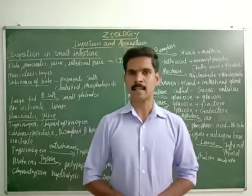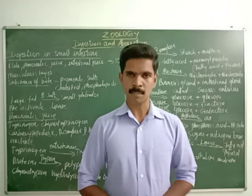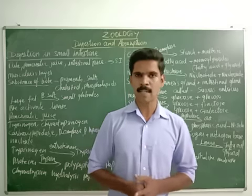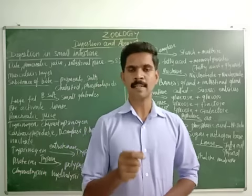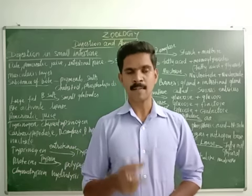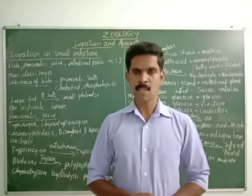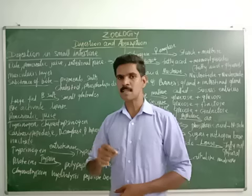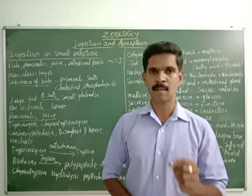The first layer is called the serosa layer. The second layer is called muscularis. The third layer is called submucosal and the inner layer is called mucous membrane. These are the four important layers present in the wall of the alimentary canal. The muscularis layer plays a very important role in digestion in the small intestine, because the movement of this muscularis layer is very important to mix the food materials with these substances.